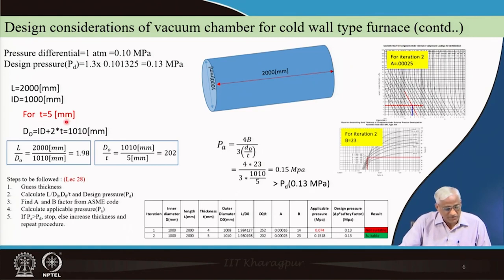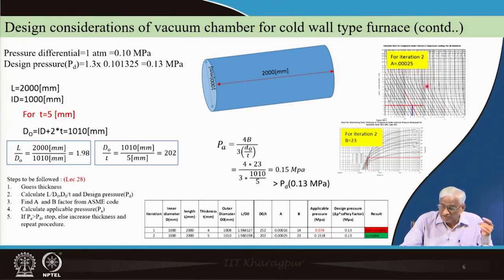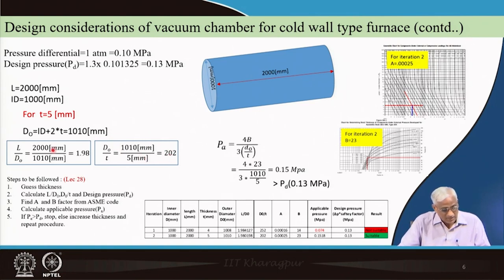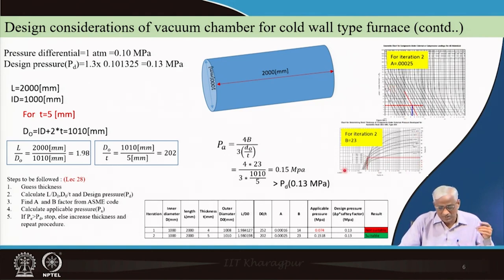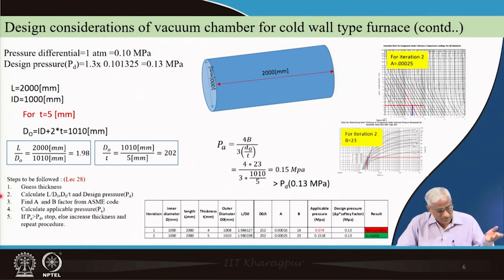For the thickness calculation, choose a trial thickness — say 5 mm — giving an ID of 1010 mm. You compute the L/D ratio and use ACME charts for different D₀/T curves. In our case D₀/T = 1010/5 = 202, and combined with the L/D ratio of 1.98, you enter the chart and read a dimensionless factor A. Once you have that geometric factor, go to the material properties at the temperature of operation. For cold wall it is mostly room temperature. Then compute B from the second curve using factor A, and apply the formula: P = 4B/3 × (T/D₀). These steps follow exactly what was done in lecture 28.